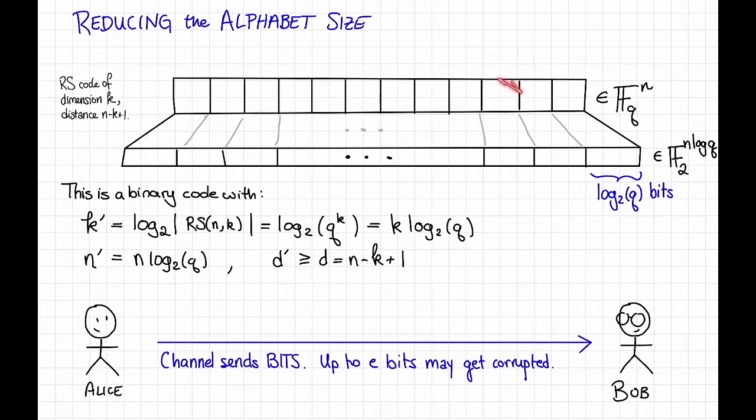that can corrupt a whole symbol here. So it's possible that by corrupting d bits, if they each occur in different symbols, that corresponds to corrupting d whole symbols in the original code word. So we don't get to multiply this by log q or anything like that.